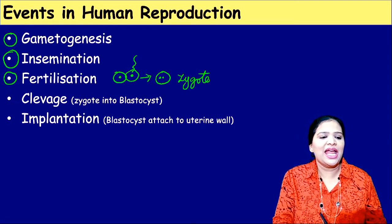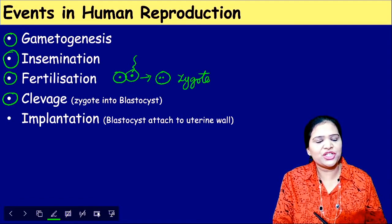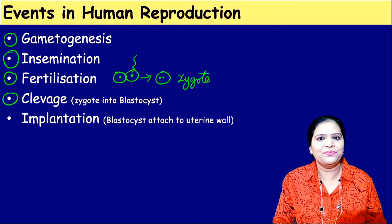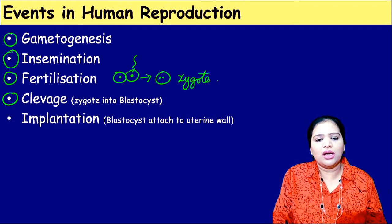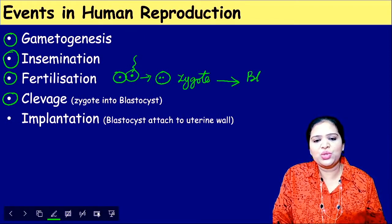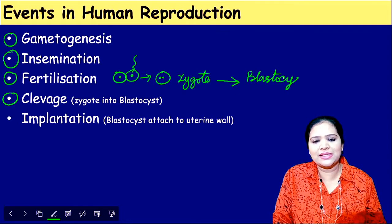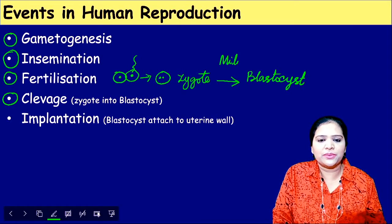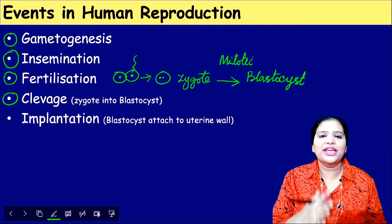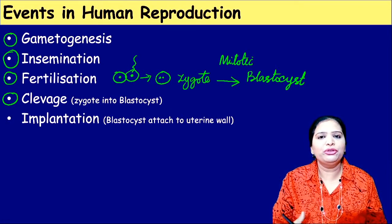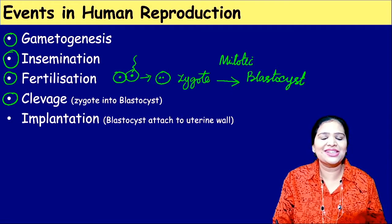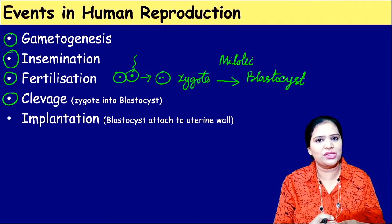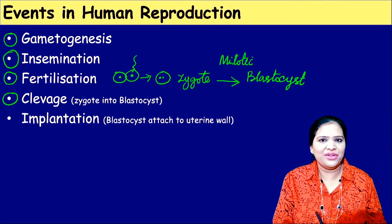The fourth step is cleavage. After fertilization, the zygote grows and develops into a blastocyst. The zygote divides by mitotic cell division — one cell divides into two, two into four, four into eight, and so on. The blastocyst consists of around 150 to 200 cells — a ball of cells. That stage is called cleavage.